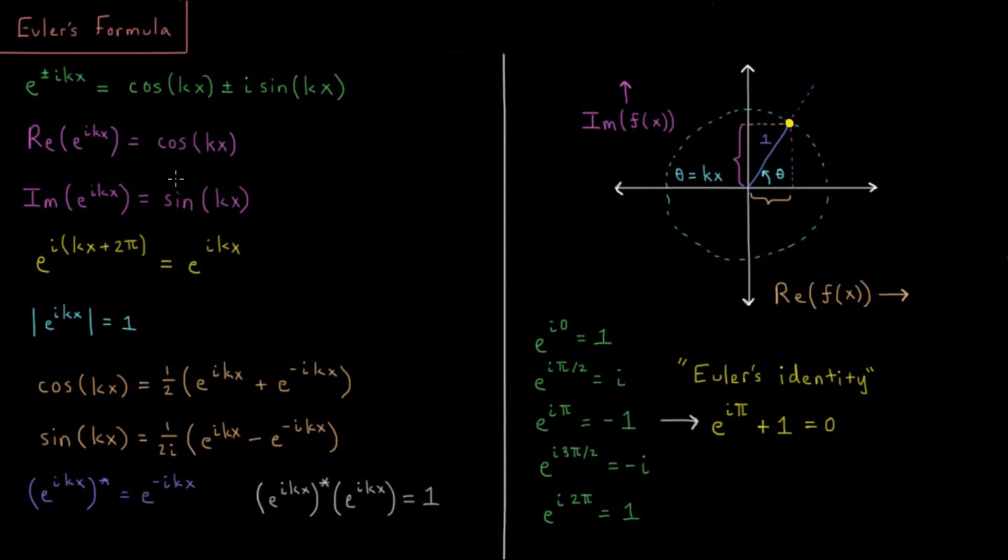So since these are sines and cosines, you'll note that if we add 360 degrees to a sine or a cosine, you just get back to the same value of the function. So this means that e to the ikx plus 2π, that's going to equal e to the ikx. So this means our function is periodic, it's repeating itself every so often.